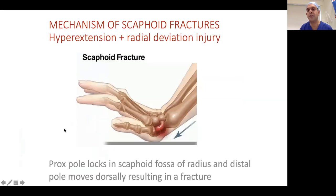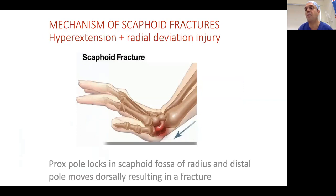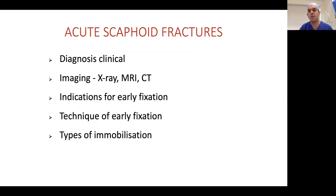The mechanism of injury is a hyperextension injury with subtle radial deviation — someone falling and breaking the fall with the hand. Remember footballers, goalkeepers, linesmen, and even spectators — I get one or two patients a year who caught a football and got a scaphoid fracture. The proximal pole locks into the scaphoid fossa, and as the hand hyperextends, the distal pole continues dorsally and you get the scaphoid fracture.